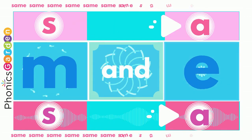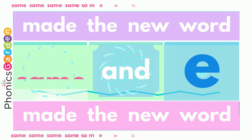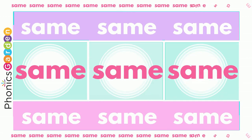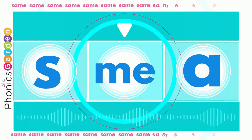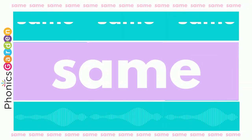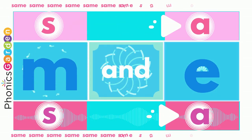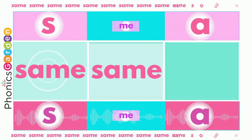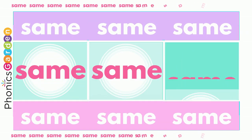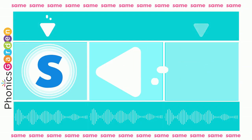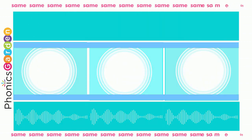S-A-M-E, same, same, same. Use the S, use the A, end it with M-E. Now you've made the new word, same for me.